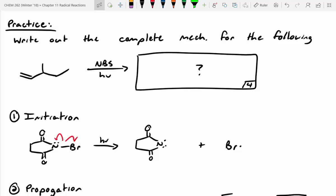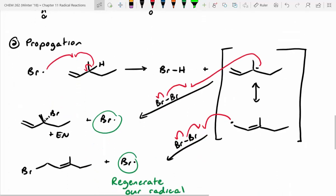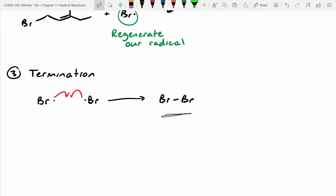So for the termination step, could you do the NBS with the Br? Yeah, absolutely. Any two radicals combining together counts for the termination step. I normally do the two bromine radicals just because it's easier to draw.